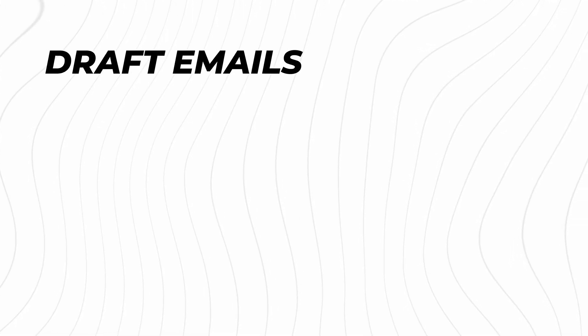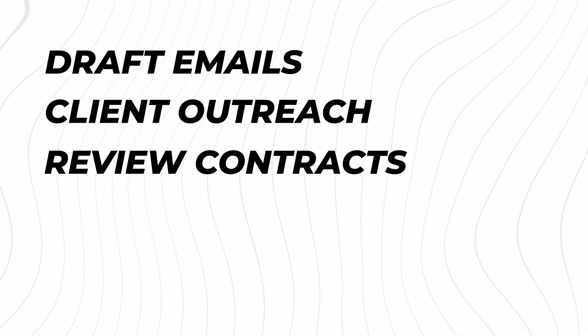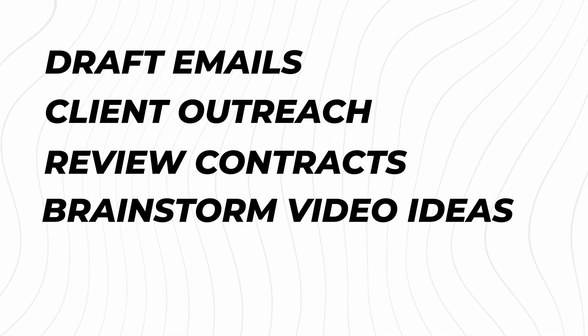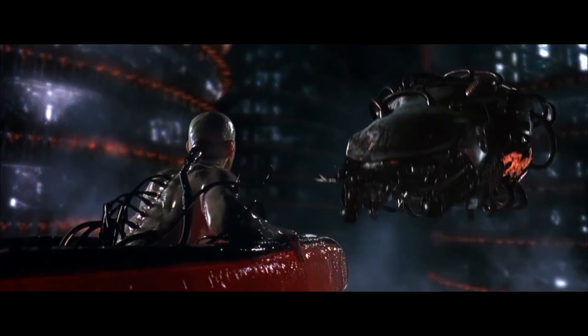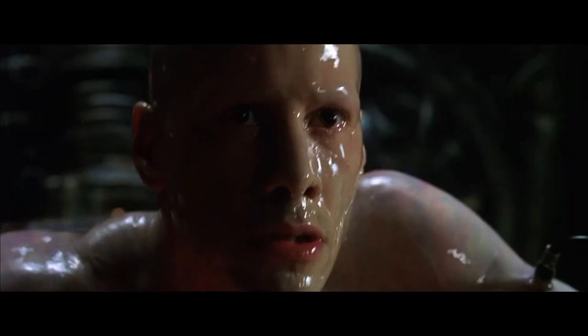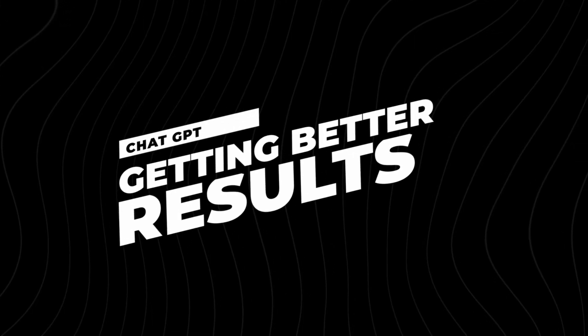Now that we've talked about saving time with images and videos, let's spend some time talking about how you can become 10x more efficient in all the other areas of your creator business. For this, we're going to be talking about the granddaddy of them all — ChatGPT. I highly recommend upgrading to GPT-4. It's far more accurate, complex, and especially better for analytical and creative content. I use ChatGPT to draft email responses, reach out to prospective clients, review contracts, brainstorm video ideas, and do research. I have this tab open in my browser all day, every day — it's like my little intern.